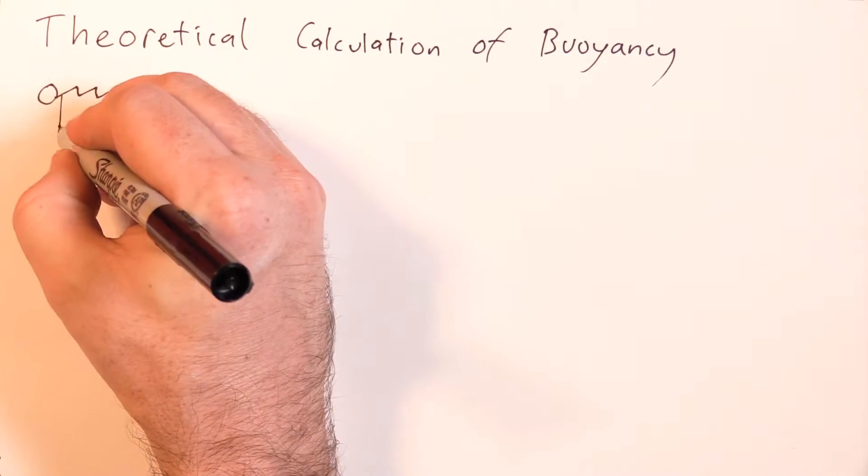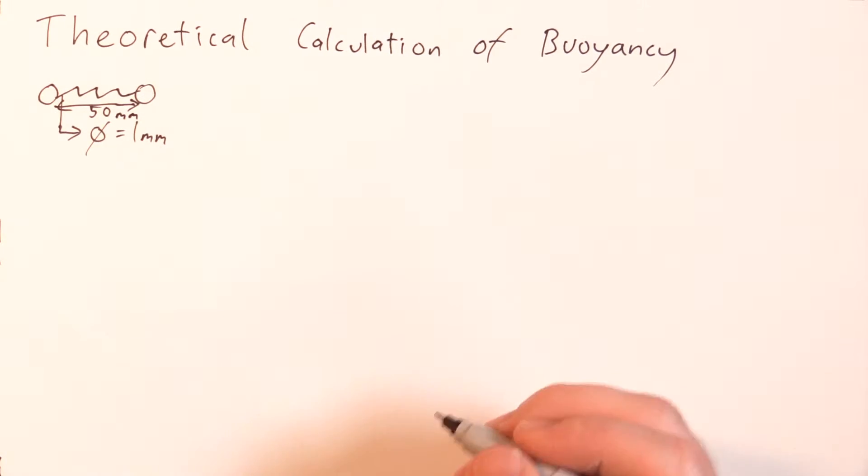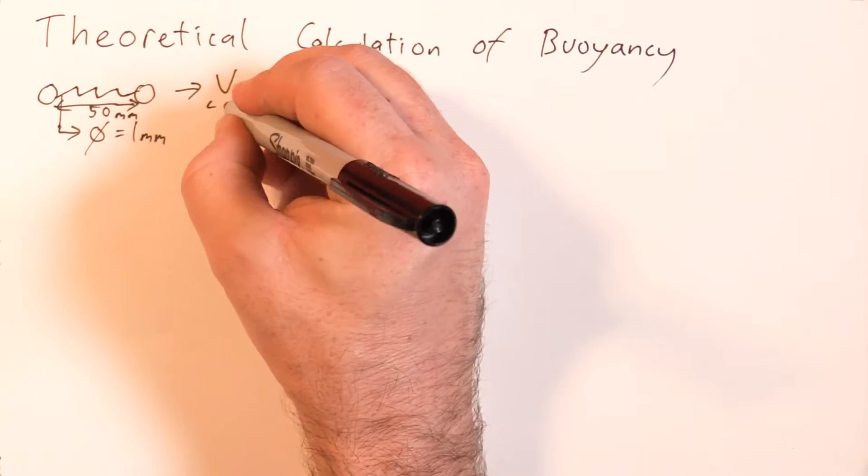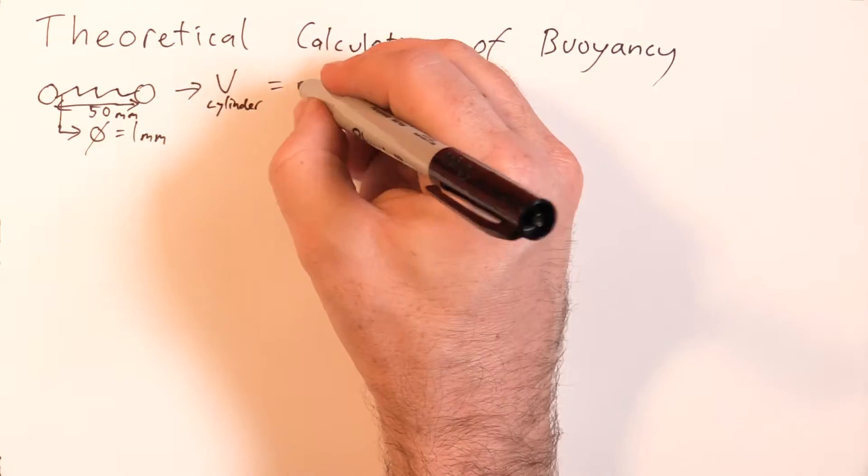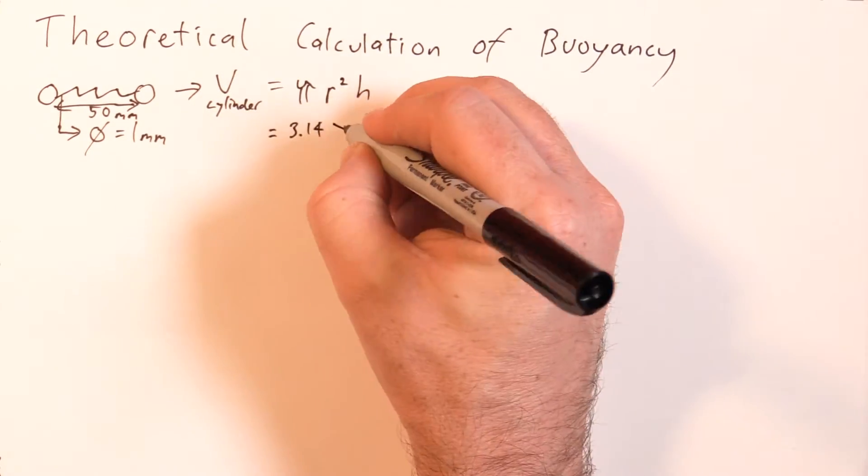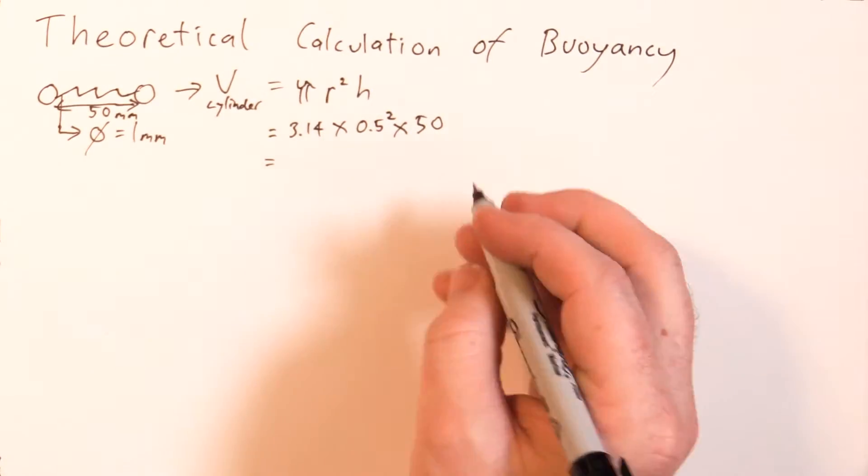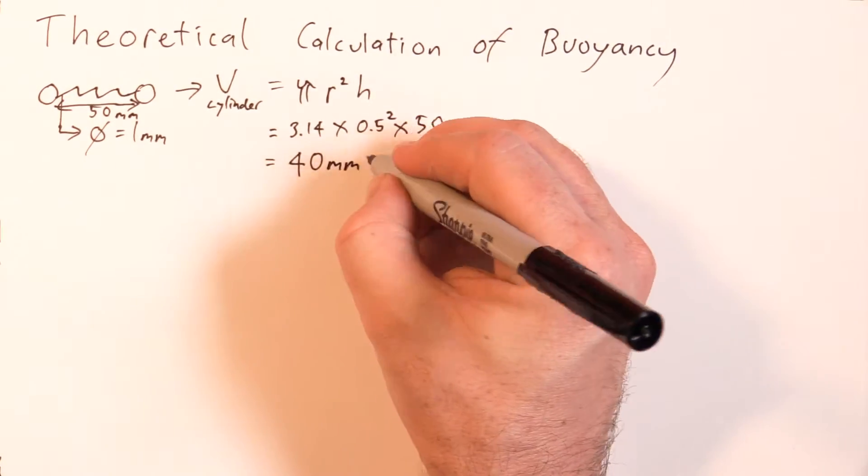To do this, we can roughly work out the volume of the air plasma electrical arc. So it's roughly 1mm in diameter and 5cm long. To work out the rough volume of the air plasma, we can use the formula for volume of a cylinder: volume equals pi times radius squared multiplied by height or length. Once you go through all the calculations, you end up with roughly 40 cubic millimeters.